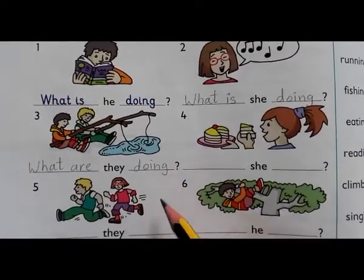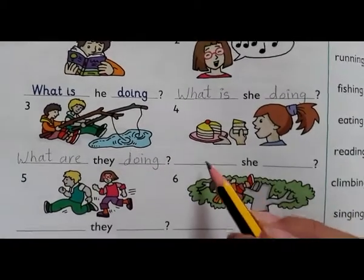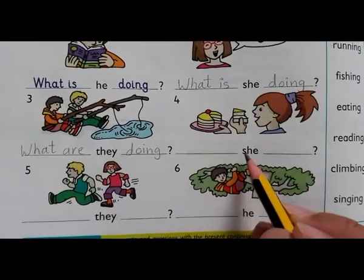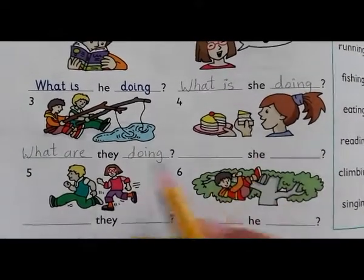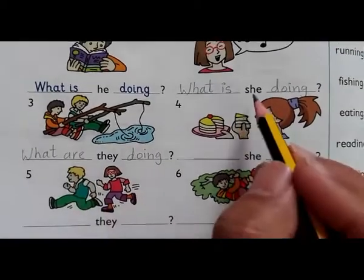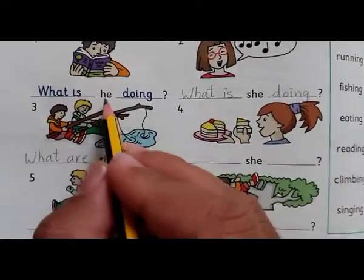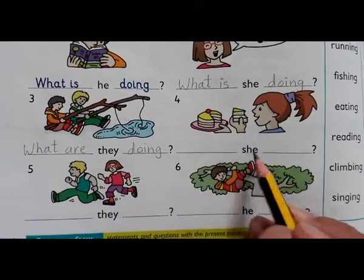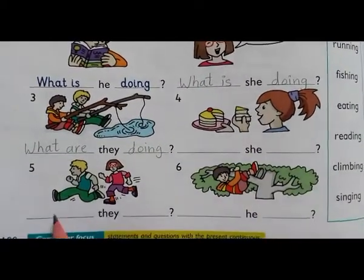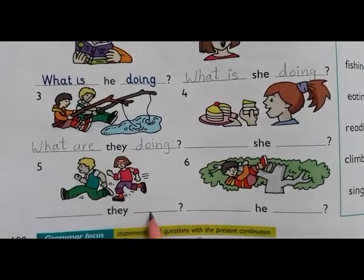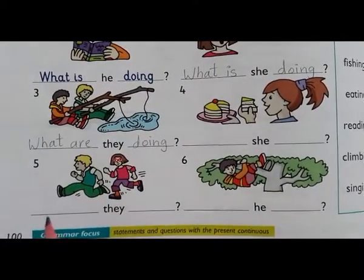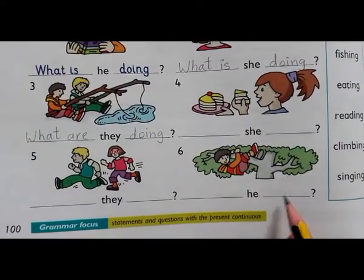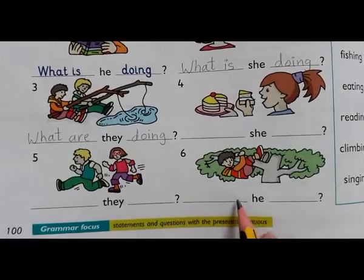What are they doing? Remember: for 'she' we use 'is', and for 'they' we use 'are'. So: what is she doing? What are they doing? What is he doing?